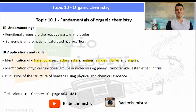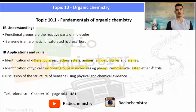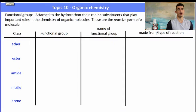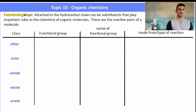The classes we look at in this video are ethers, esters, amides, amines, nitriles and arenes. And we need to be able to identify the functional groups in those different compounds. So remember the functional groups are the substituents that play important roles in the chemistry of a molecule. They're the reactive parts of a molecule.